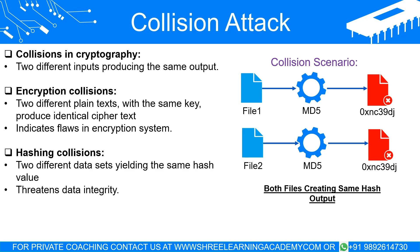Understanding hashing and hash collisions. Hashing is another cryptographic technique that takes an input or message and returns a fixed-size string of bytes, typically in the form of a hash value or digest. Unlike encryption, which is designed to be reversible (decryption), hashing is a one-way function — the original input cannot be easily retrieved from the hash value. A hash collision happens when two different data sets produce the same hash value. This is problematic because hashing is designed to provide unique hash values for different inputs, serving as a form of digital fingerprint. When collisions occur, it threatens the integrity of the hash data.